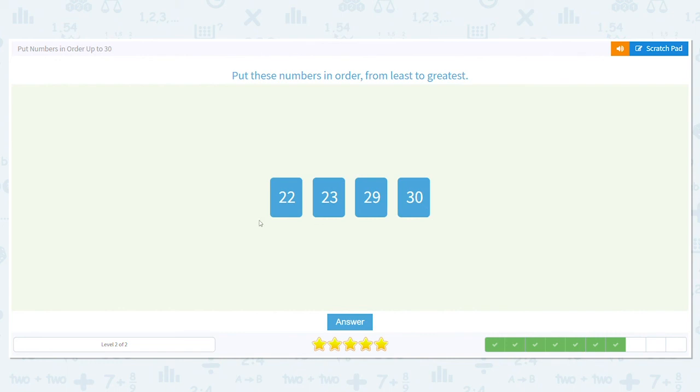Now let's look. Let's see what we have. We have 22, 23. That looks good. Does 23 come before 29? It does. Not right before, but it is before it. Does 29 come before 30? Yes. Great job. Next one.